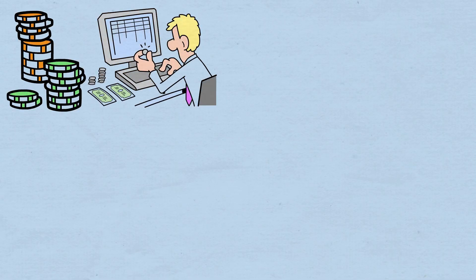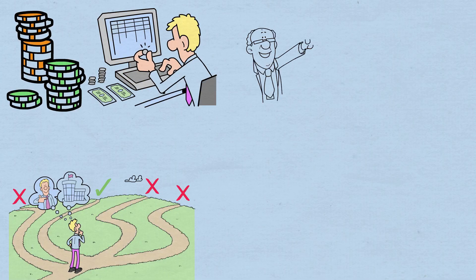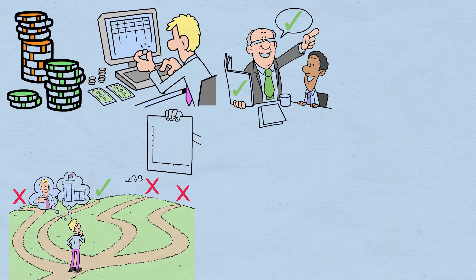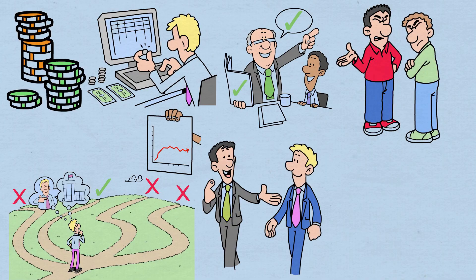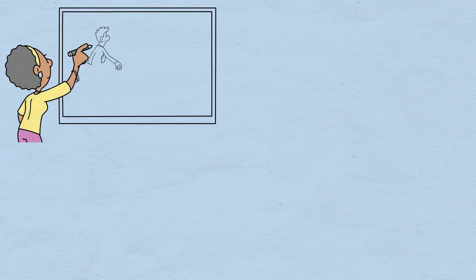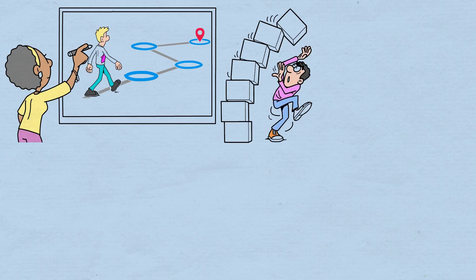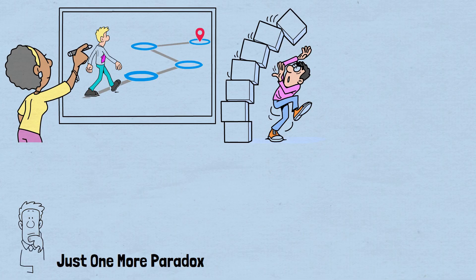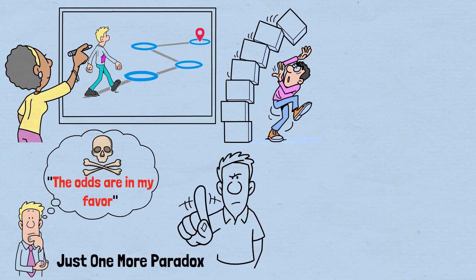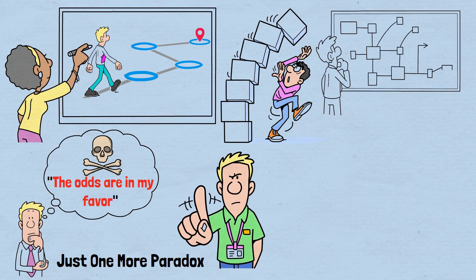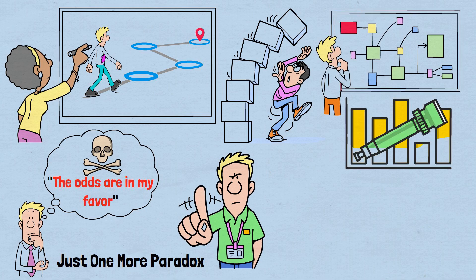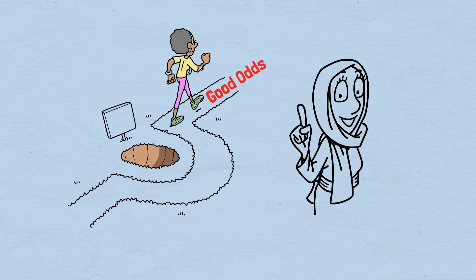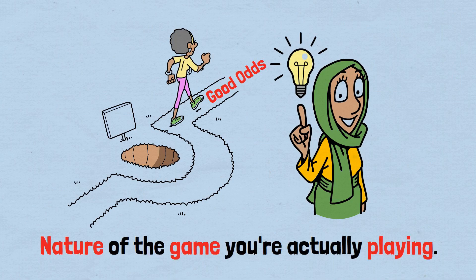The paradox doesn't just apply to gambling or investing. It appears in career decisions where each individual opportunity looks promising but compounds into career stagnation. It appears in relationships where each individual conflict seems manageable but multiplies into irreparable damage. It appears in environmental and social policies where each individual decision seems reasonable but compounds into systemic collapse. The just one more paradox reminds us that in mathematics, as in life, the most dangerous phrase might just be, the odds are in my favor. The question isn't whether the odds favor each decision, but whether the mathematical structure of the game itself favors long-term success. And that, perhaps, is the most important lesson of all. That good decisions aren't just about good odds, they're about understanding the mathematical nature of the game you're actually playing.